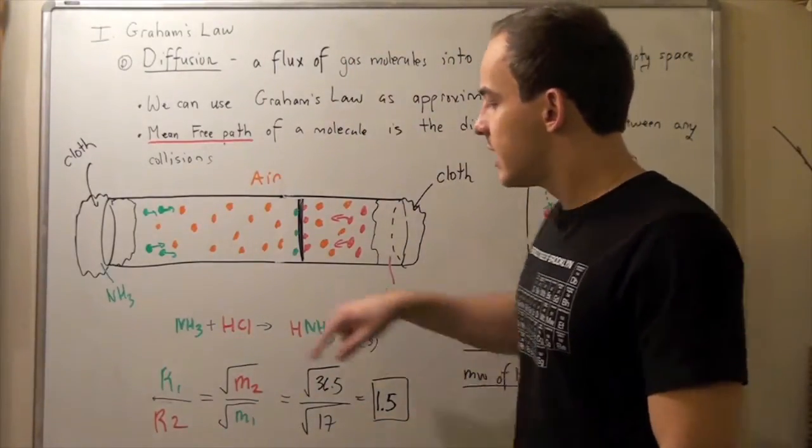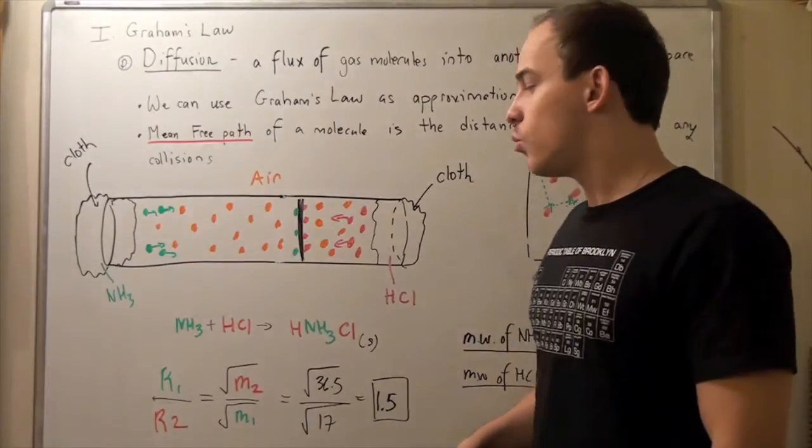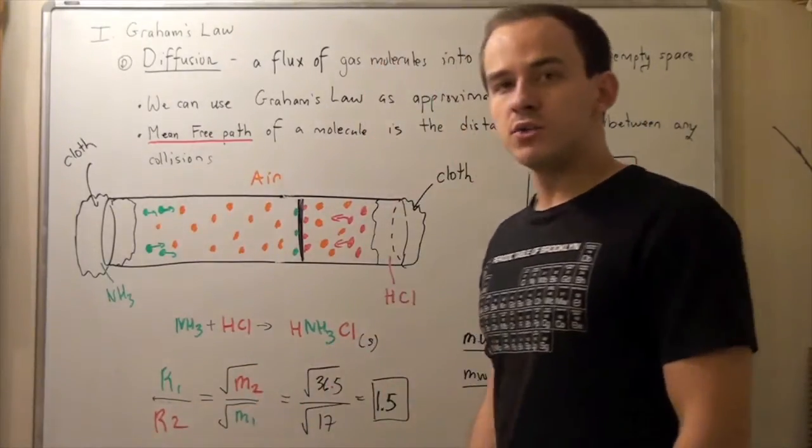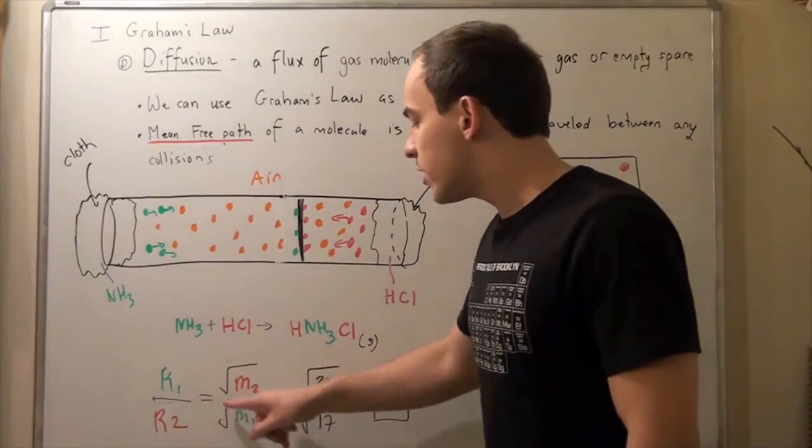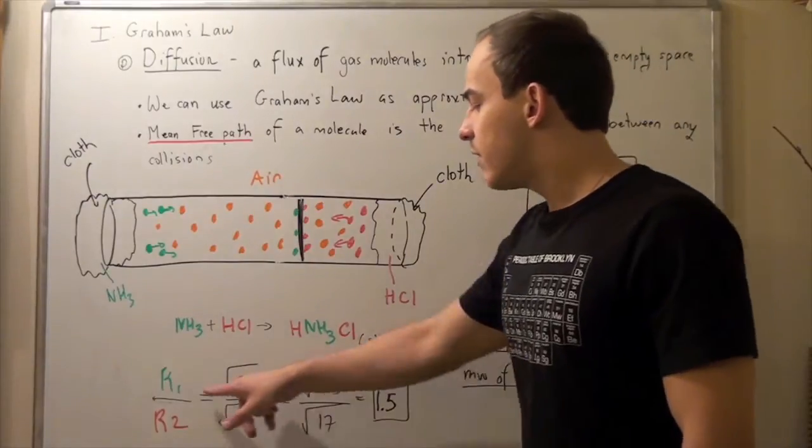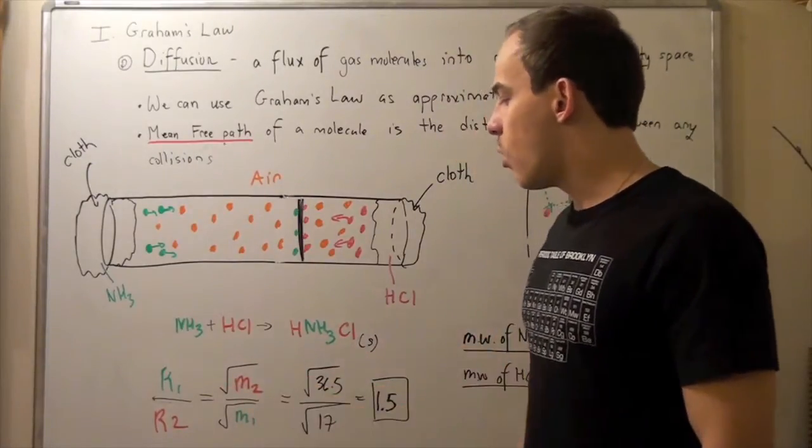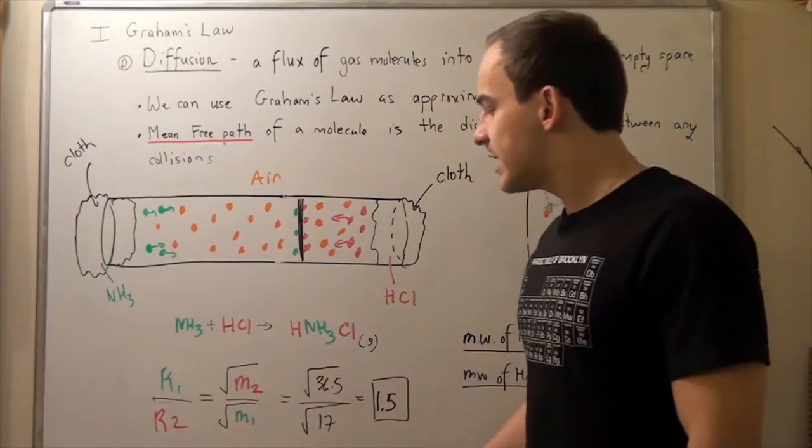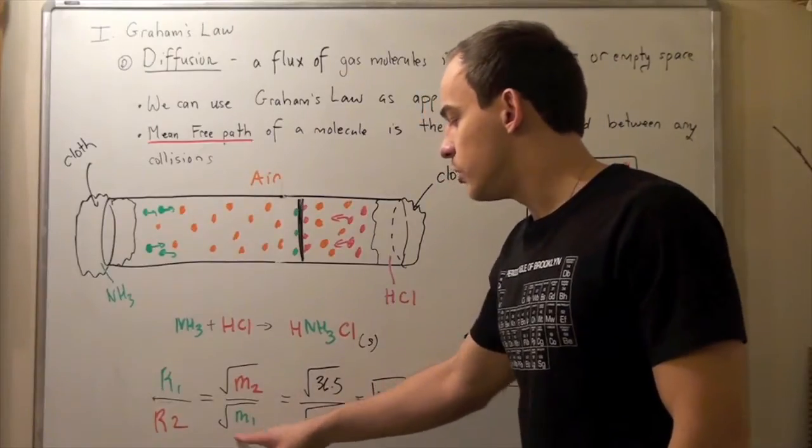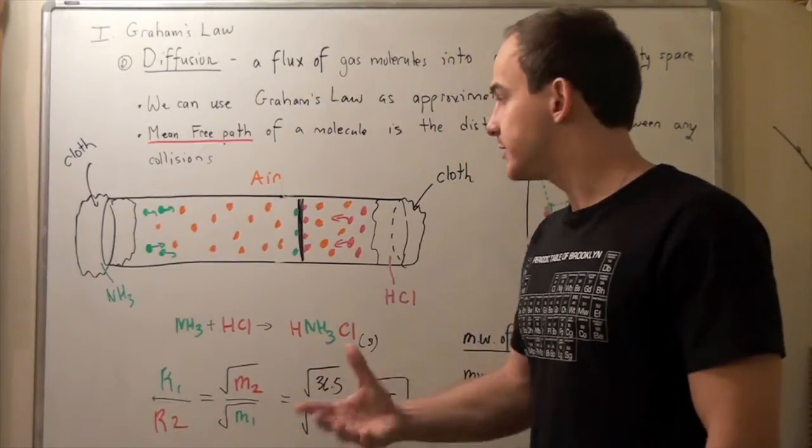And Graham's Law states that rate of gas molecule one over rate of gas molecule two is equal to the square root of mass of two divided by the square root of mass of one. And what this says is that the lighter the molecule, the faster its rate or the higher its rate.